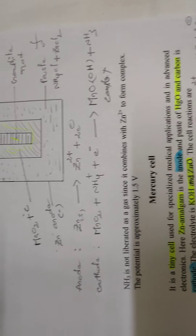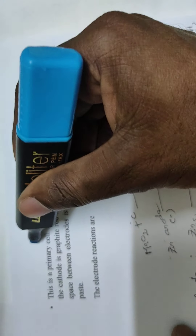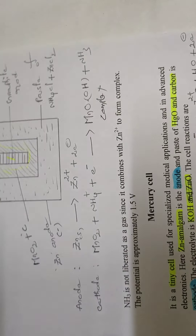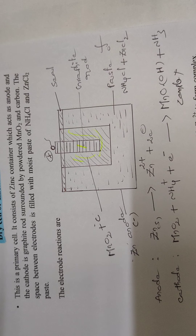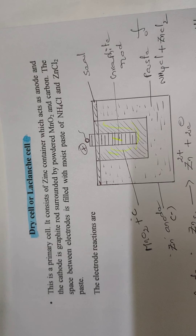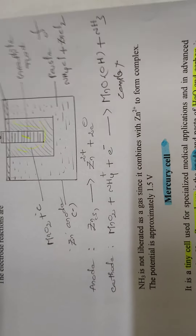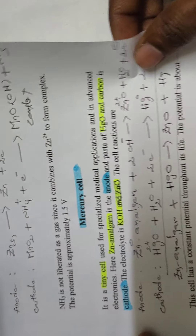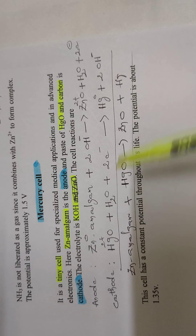These are the two main examples of primary cells: the Leclanche cell (dry cell) and the mercury cell. For examination purposes, remember — in the dry cell: zinc container is the anode, graphite is the cathode, and NH4Cl + ZnCl2 paste is the electrolyte. In the mercury cell: zinc amalgam is the anode, HgO + carbon powder is the cathode, and KOH is the electrolyte. Thank you for watching.